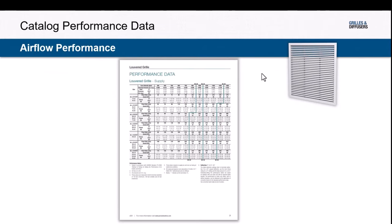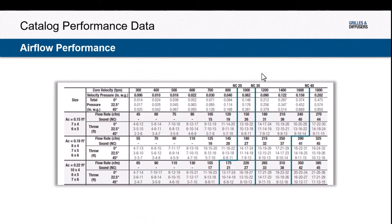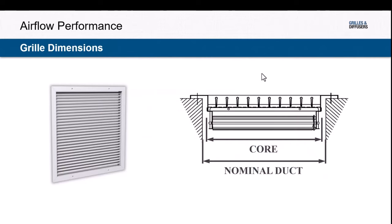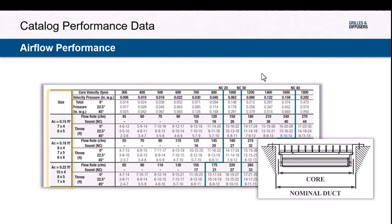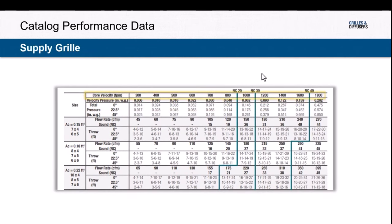Looking at a catalog page for a single deflection louvered face grill, there are a range of sizes along the left-hand side. When it comes to grill size, we talk about two different dimensions: a nominal duct dimension and a core dimension. The nominal duct dimension is literally the opening of the hole you're trying to fill. It is the core area that drives the performance of the grill. In this example, an 8x4, 7x5, or 6x6 grill all have a core area of approximately 0.18 square feet, and we can look at performance across a wide range of air velocities.